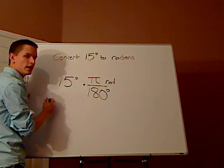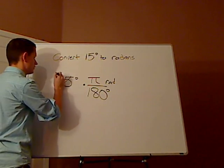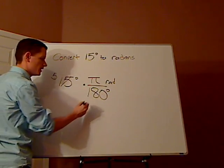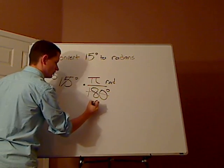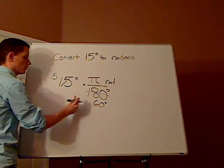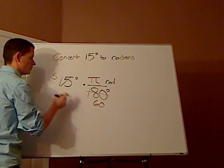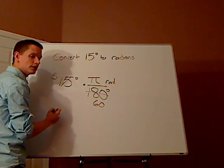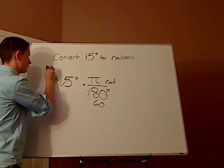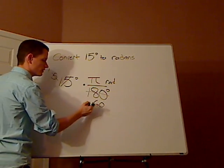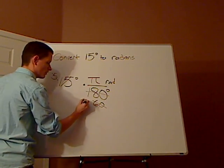Three goes into fifteen how many times? Five. How many times does three go into 180? Sixty times. Then what number goes into both five and sixty? That's right. Five. Five goes into five once. Five goes into sixty twelve times.